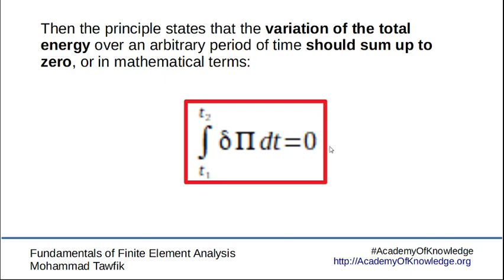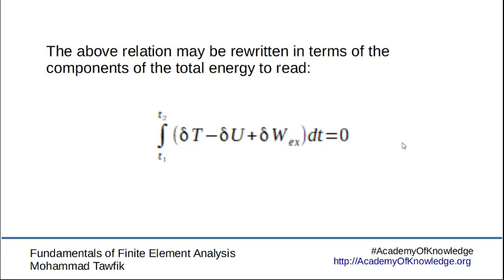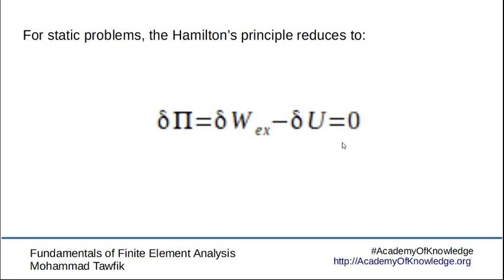There is a lot of philosophy and mathematics behind this principle. I'm not here trying to explain where it came from, but it is a very important principle we need to always have satisfied. In static problems, this reduces to: the variation of the total energy equals zero, since time doesn't matter. Expanding this, we have the variation of kinetic energy minus the variation of potential energy plus the variation of external work, integrated over time, equal to zero.